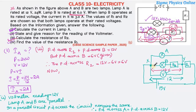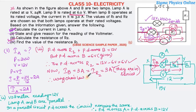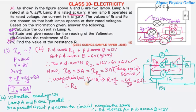The current through B is 3 ampere. Since lamp B and R2 are in series, the same current of 3 ampere flows through R2. Now that we have both the potential difference and the current, using Ohm's law V = IR, we get R2 = V/I = 6 volt / 3 ampere = 2 ohm. Therefore the value of resistance R2 is 2 ohm.